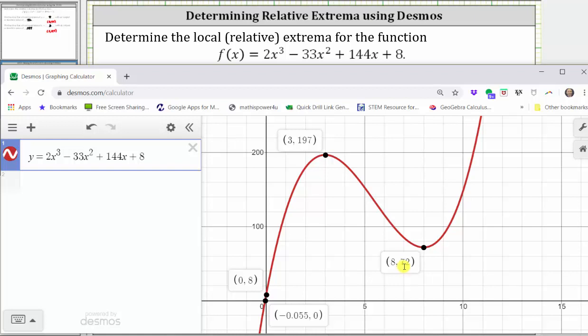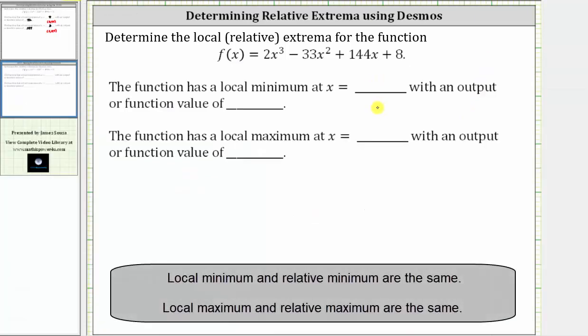Let's record this information. Again, for the local minimum, we know the low point had an ordered pair of three comma 72, and for the local maximum, we know we had a high point at eight comma 197.